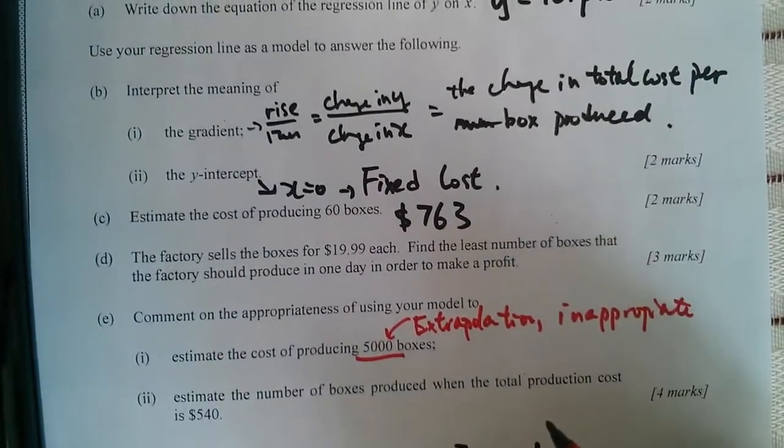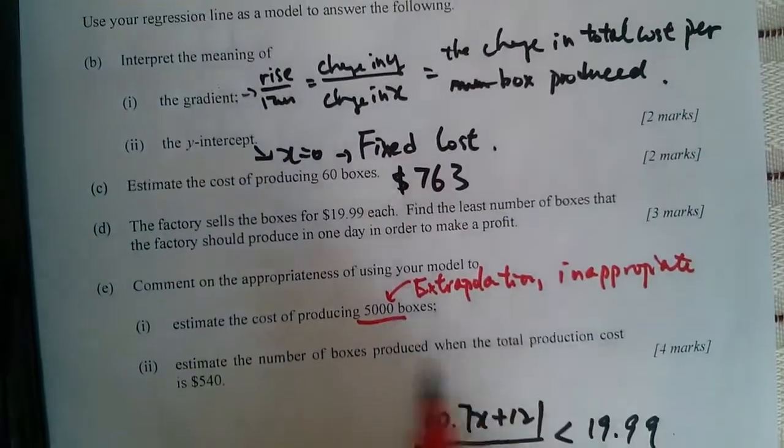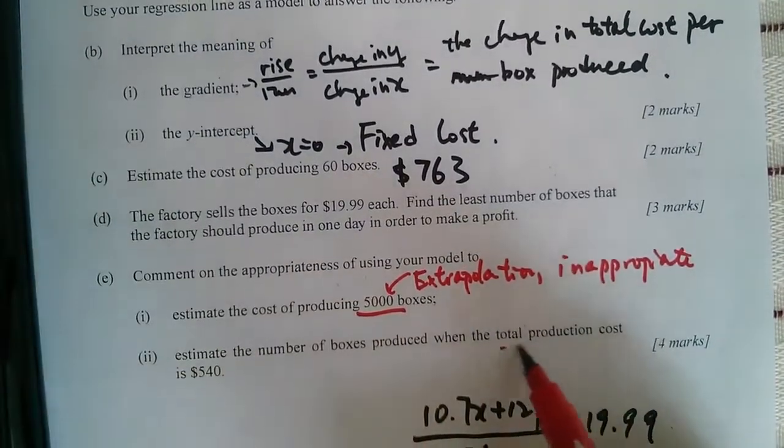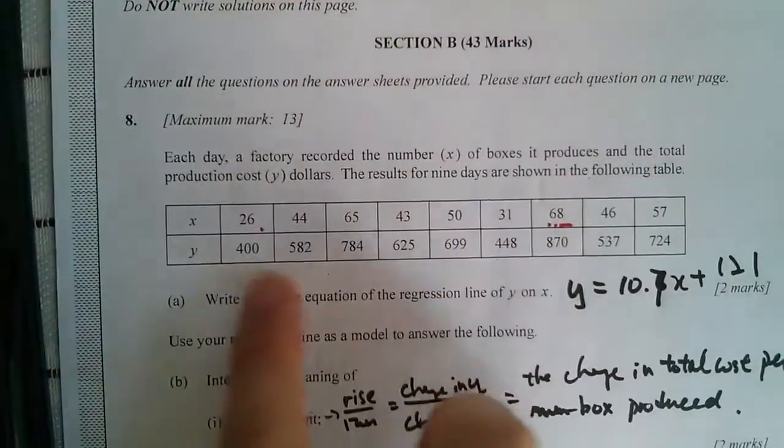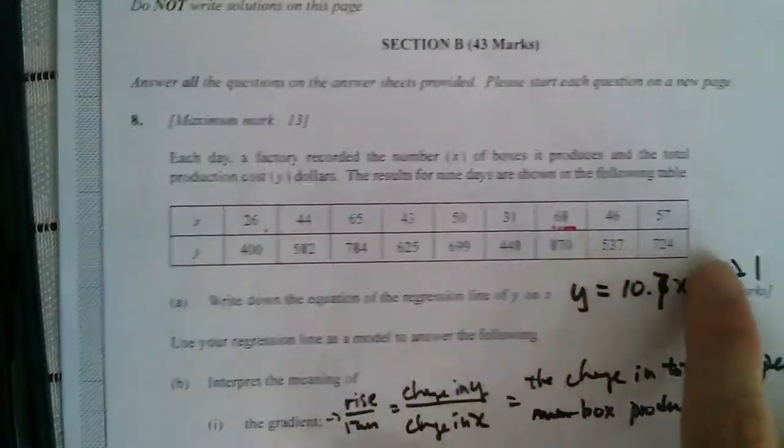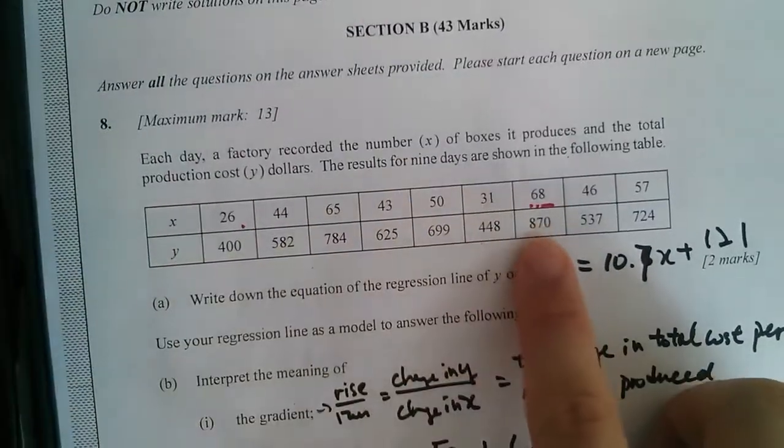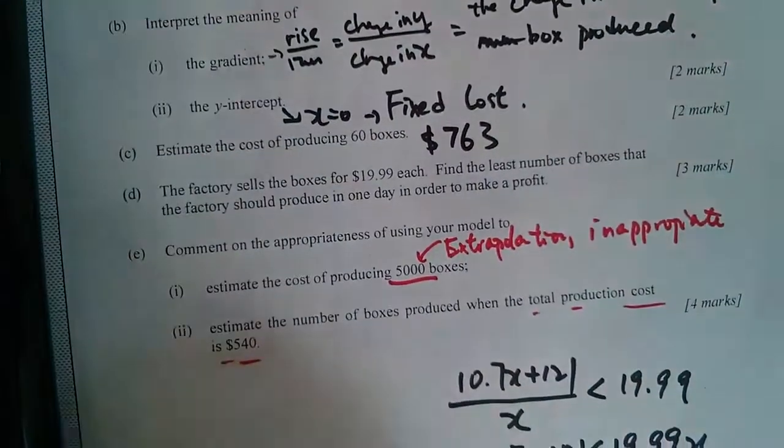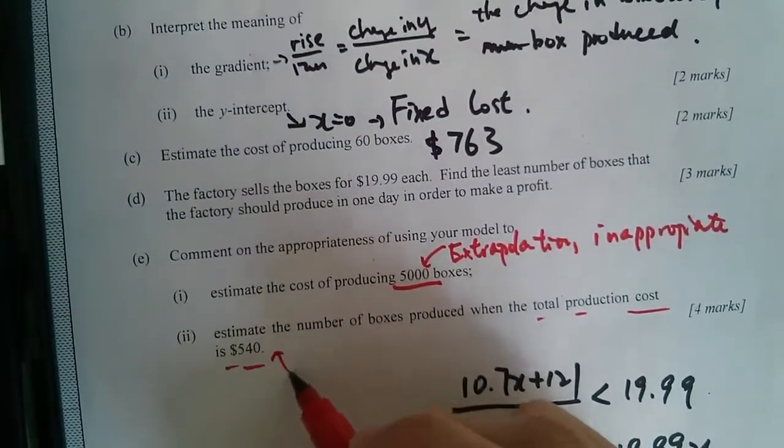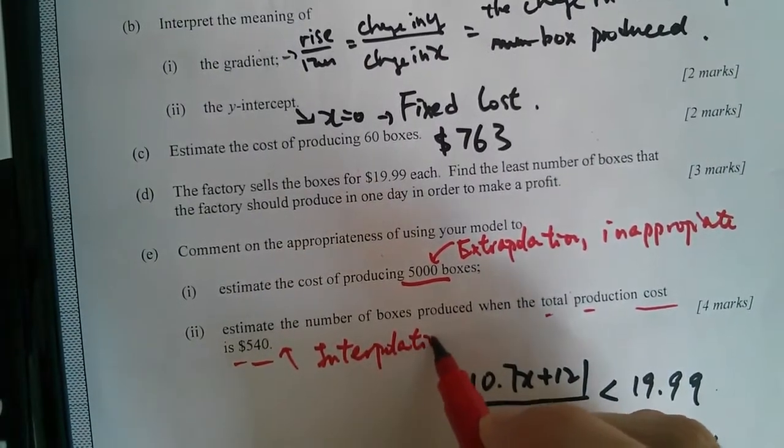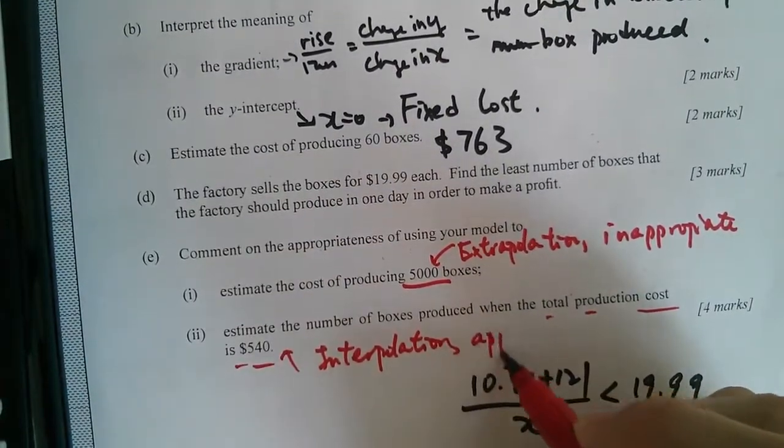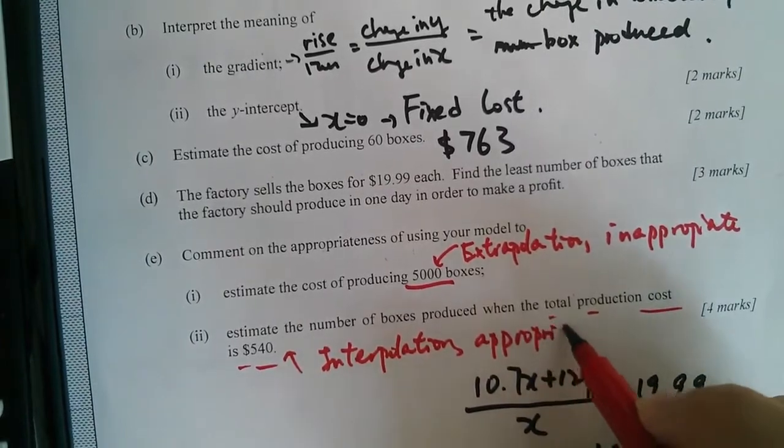Estimate the number of boxes produced when the total cost is 550. The lowest in this range is 400, highest is 800 something, so it seems that 550 is inside the range. So we call this interpolation, and we would say that would be appropriate.